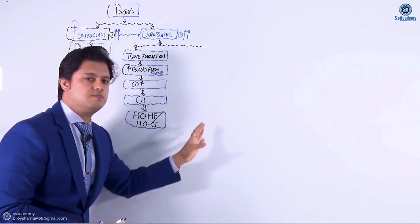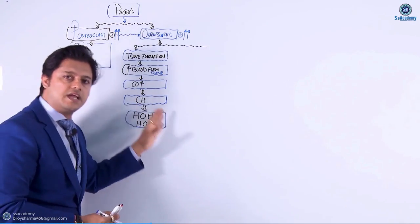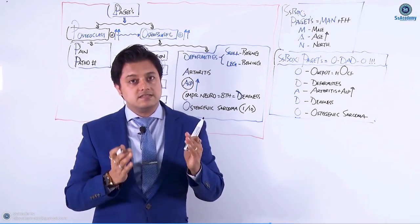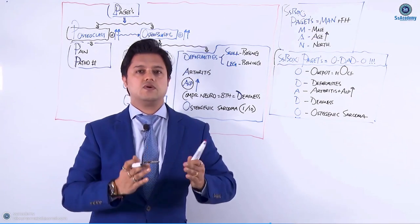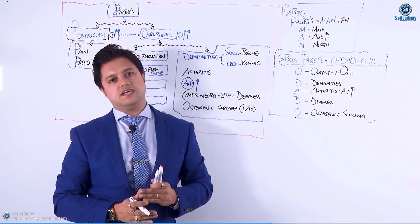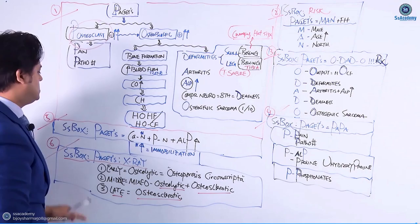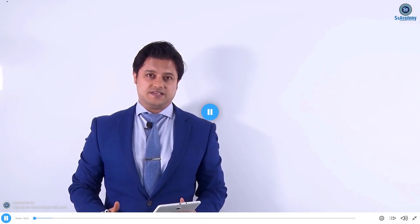Say with me: osteoblastic bone formation, blood flow, cardiac output, cardiac hypertrophy. O for output failure, last O for osteogenic sarcoma, and the DAD - D for deformities, A for arthritis, A for alkaline phosphorus, and D for deafness. Hello my dear doctors, a very important topic that we are discussing here. This is a very five-star topic, just follow me. What is written in your notes first, and after that we'll go on to the board.